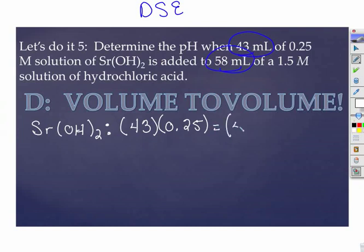43 plus 58 times molarity 2. And if I did my algebra right, big if, always check, I get 0.1064 molar strontium hydroxide.